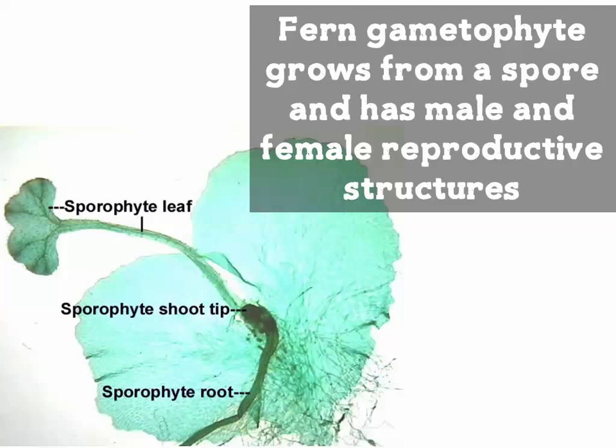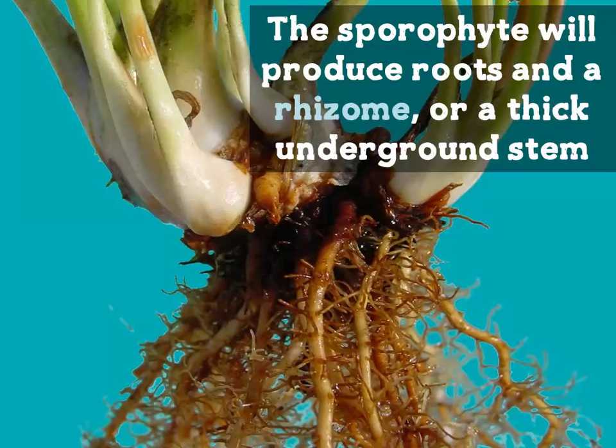The fern gametophyte grows from a spore and contains male and female reproductive structures. Think about why this might be an advantage. After the sporophyte shoots up, it is actually initially dependent on the gametophyte. One adaptation of some ferns is that they can produce sporophytes without fertilization.